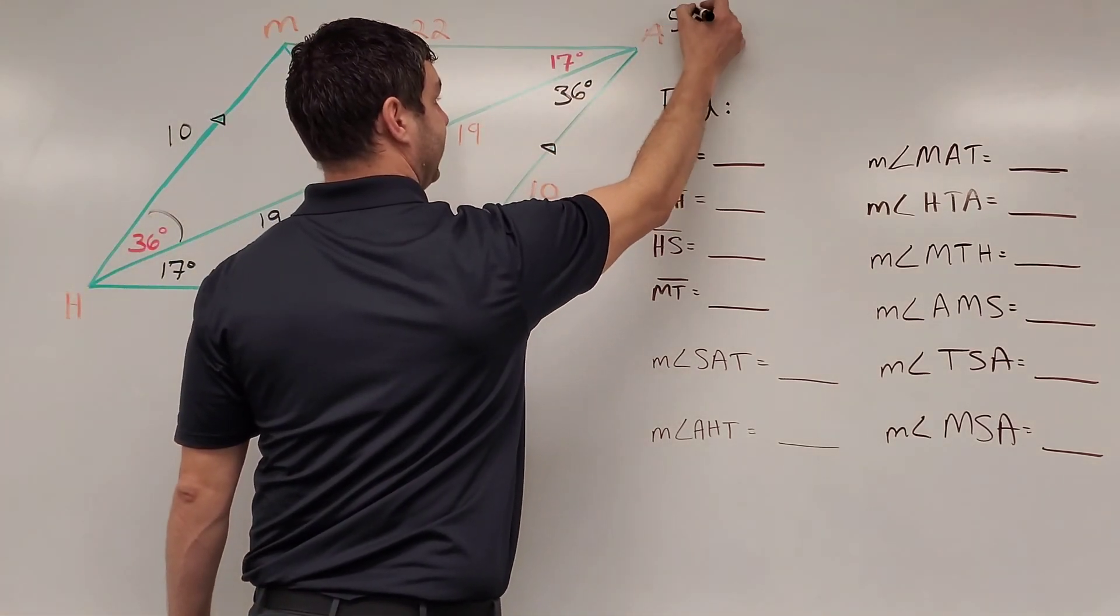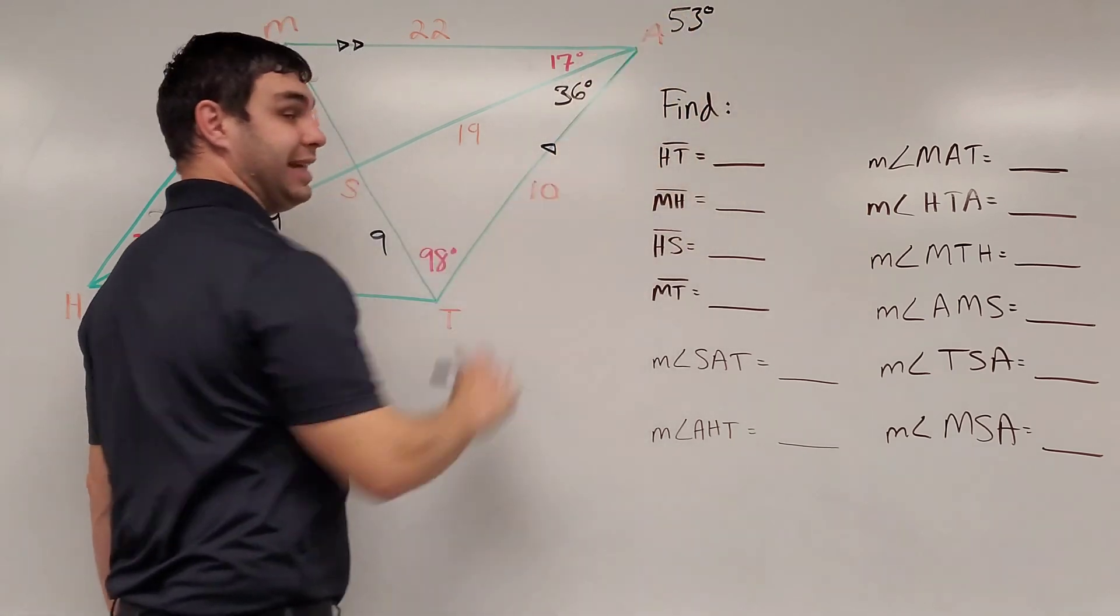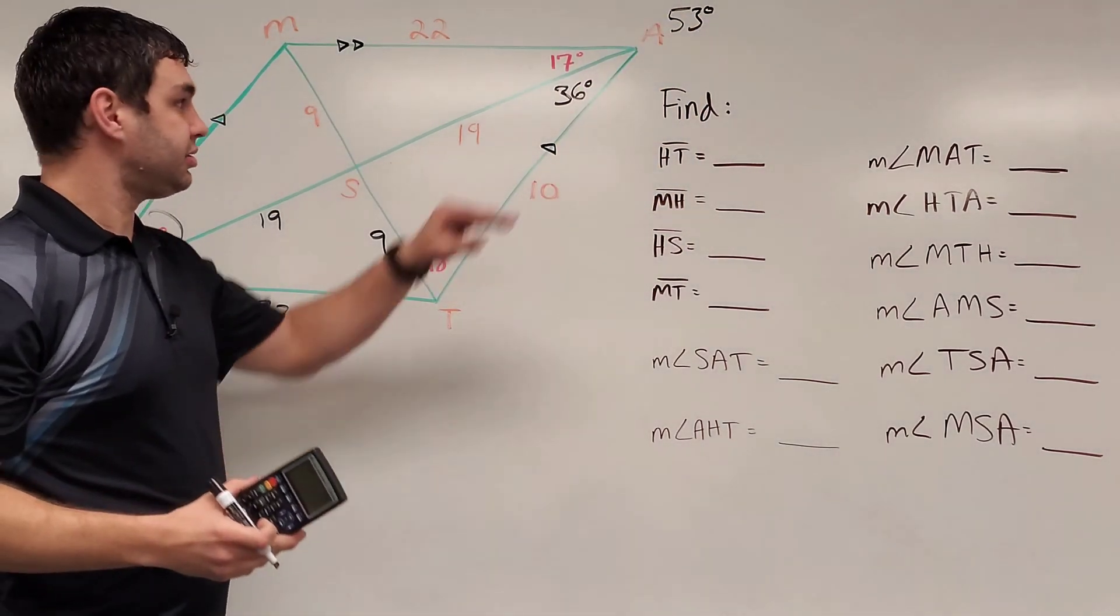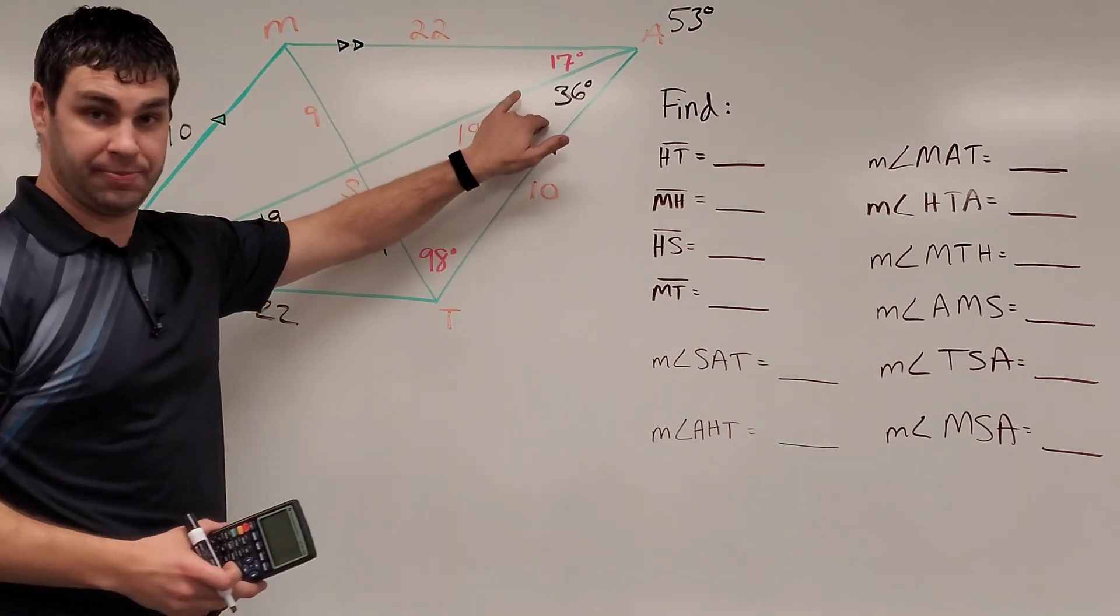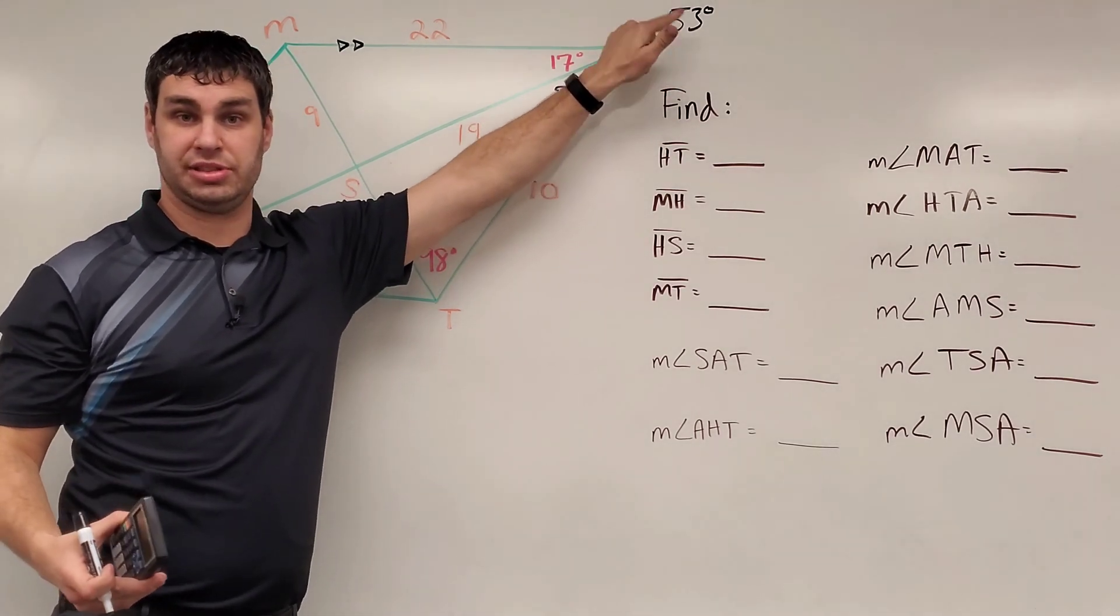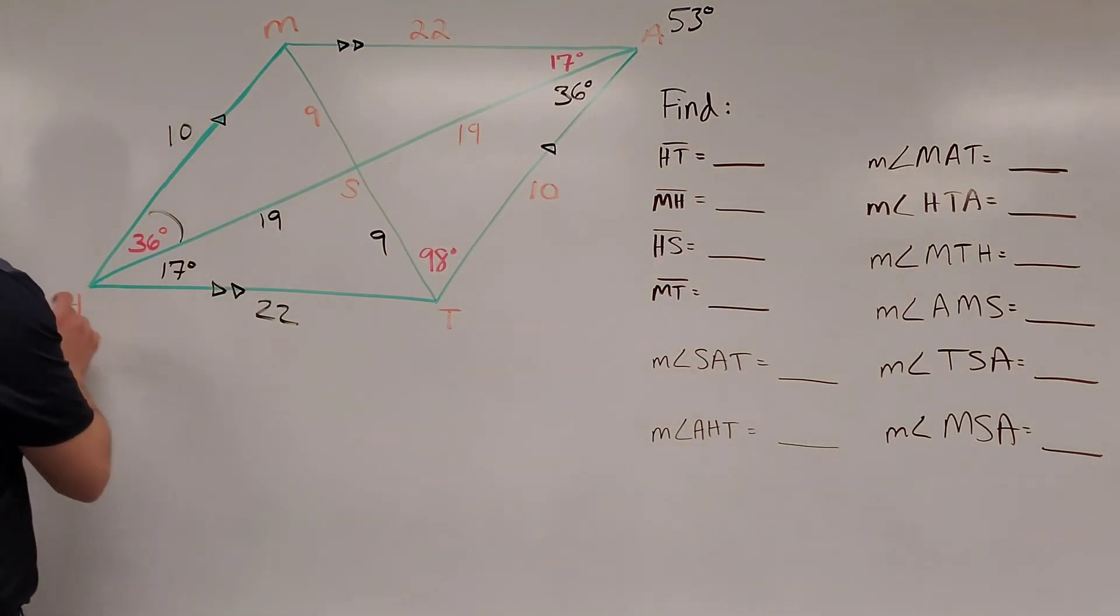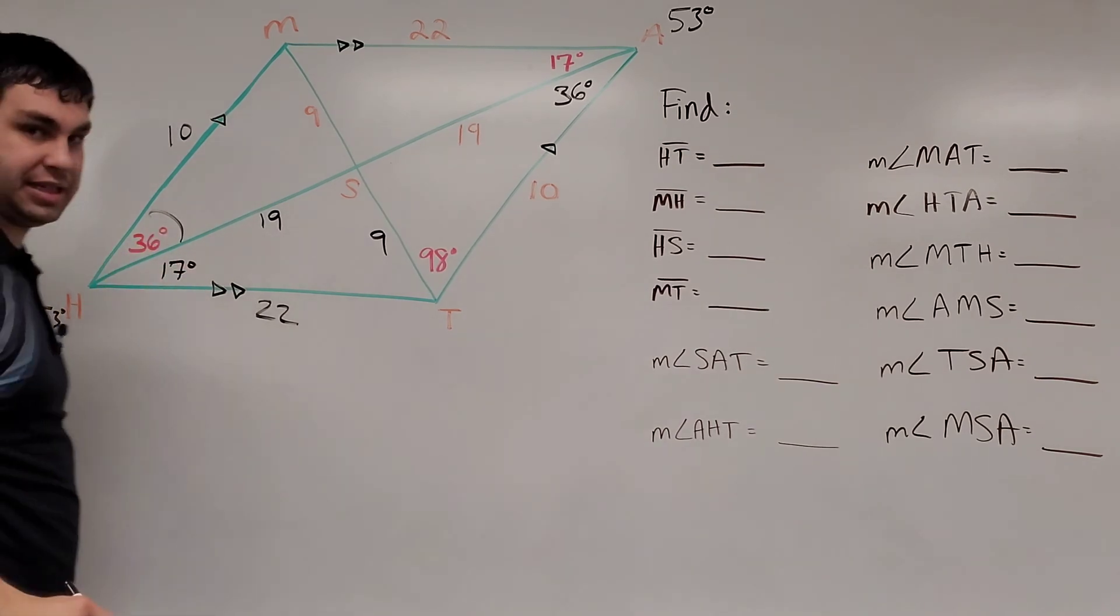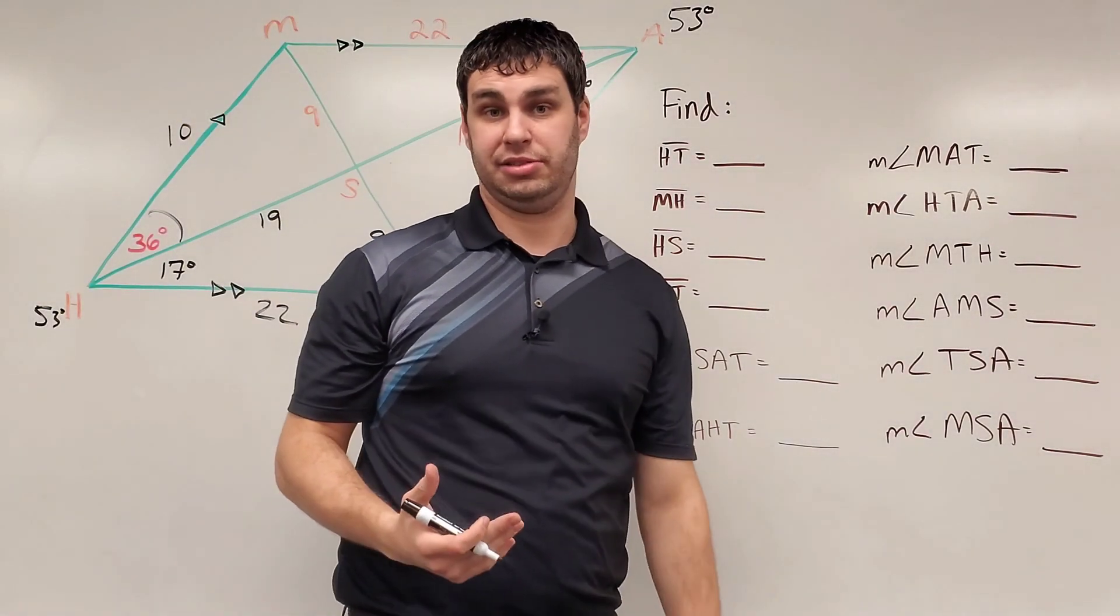All right, when I'm talking about the entire angle, I like to put that on the outside, whereas the different parts I put on the inside here and here. Okay, if this is 53, we have the opposite angles theorem, which says that the opposite one is also 53 degrees, and that would make sense because those are the same two numbers that we would add together to find those.